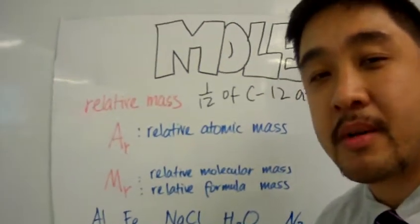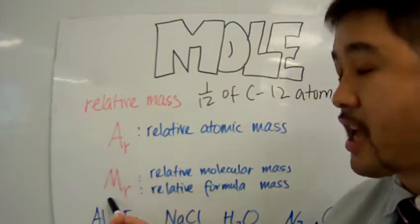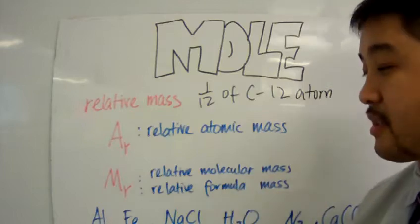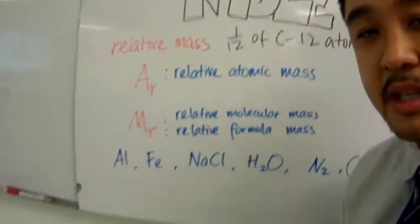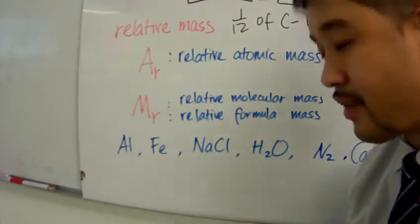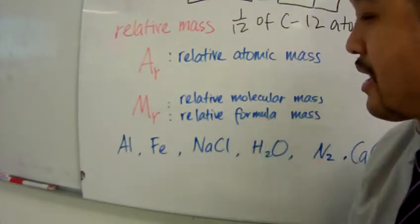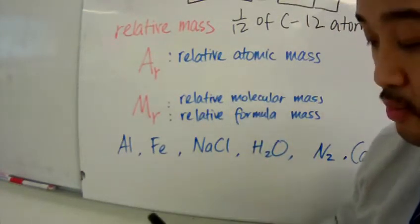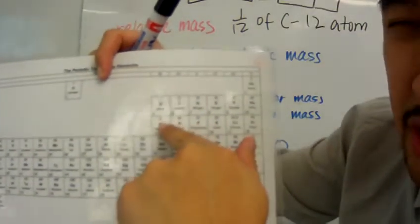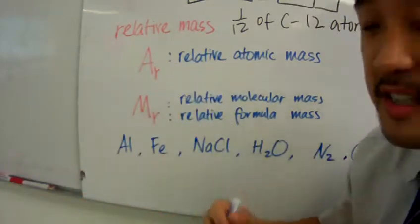Now, in your course of studies, you will come across AR and MR. AR is simply the relative atomic mass. So for example, here I have two elements, aluminum and iron. What is the relative mass of aluminum? Well, the relative mass of aluminum is here, twenty-seven. So let me write that down.